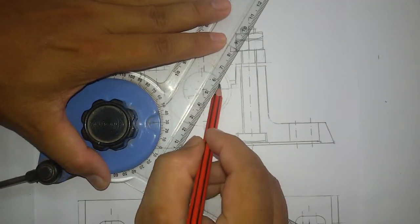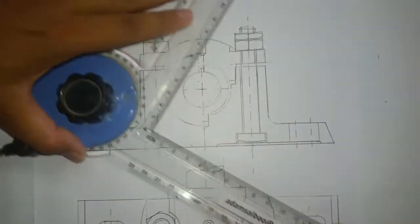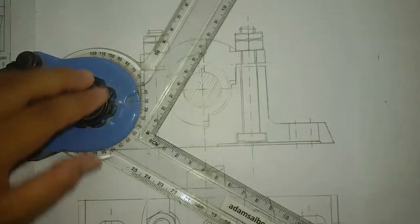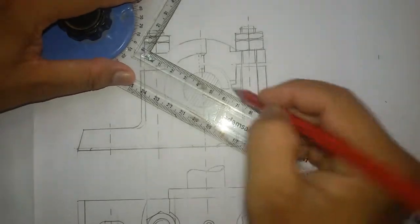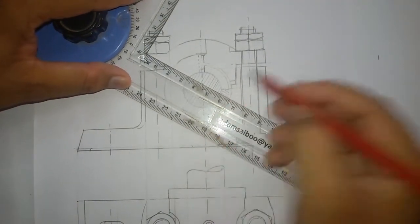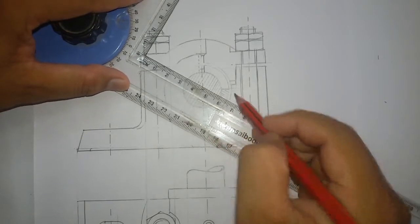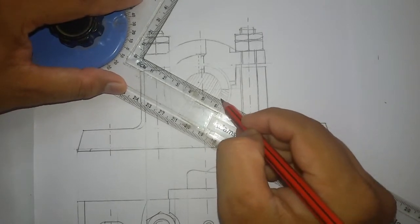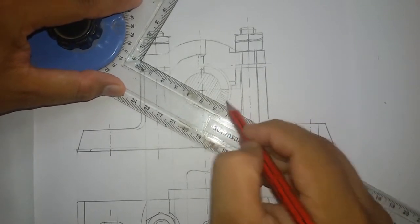First hatch the circle then hatch the bush. I am hatching the bottom portion of the bush. While hatching the bush you have to draw lines very close because the thickness is very small.